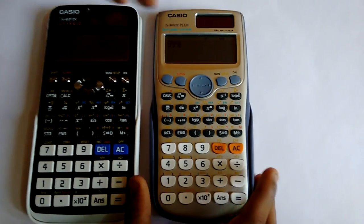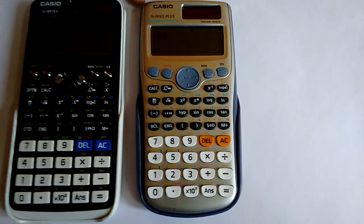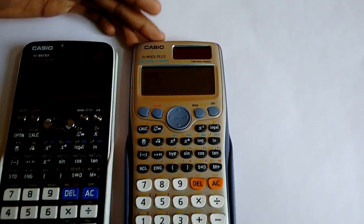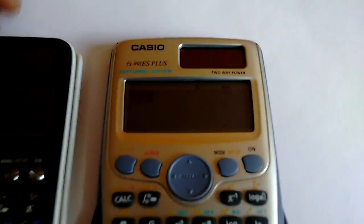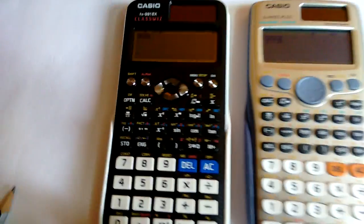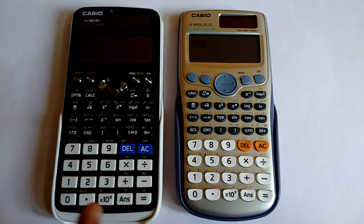This one has a 15 digit display on the ES Plus calculator and this has 16 digits display on the EX version. There is only one digit difference.